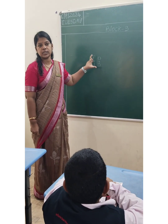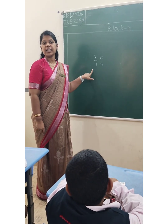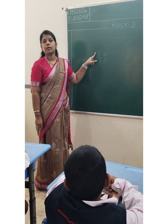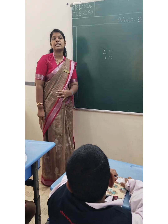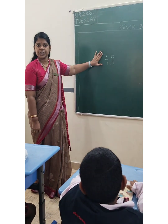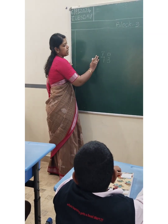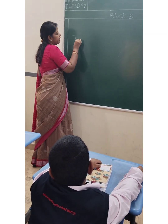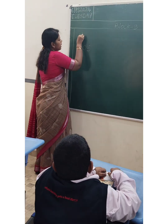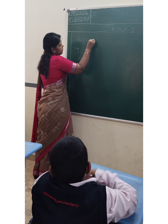3 is in which position? 3 is in 1's position. 7 is in which position? 7 is in 10's position. Place means showing the position. Is it clear everyone? Yes ma'am. Now see number 703 — I am writing the number 703.